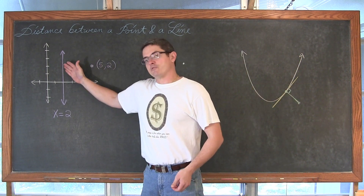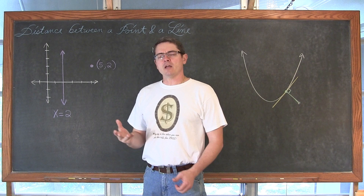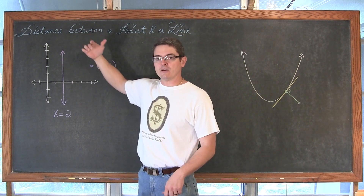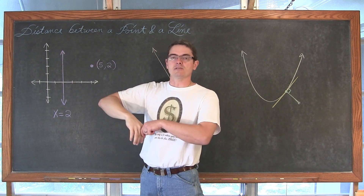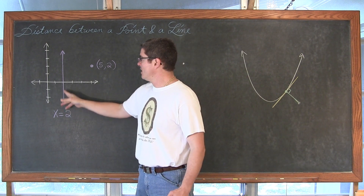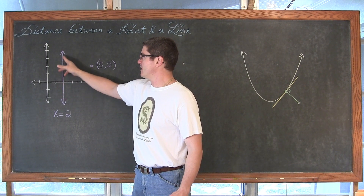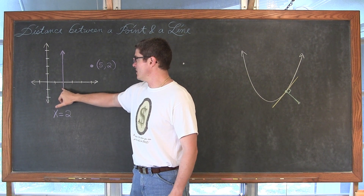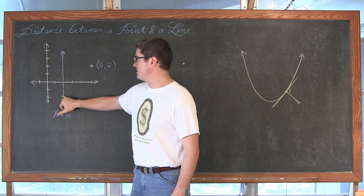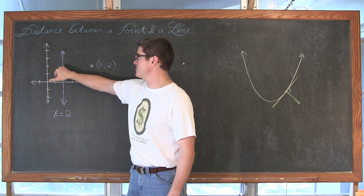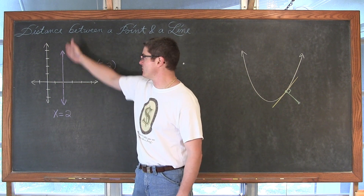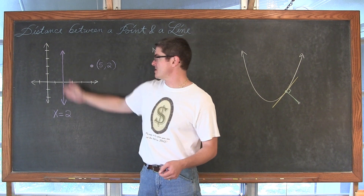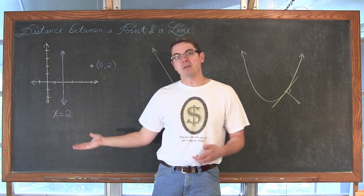Let's focus on this one first. We have a vertical line. All graphs are basically consisted of an infinite number of points. When you move just up or down, it is only the y coordinate that is changing — so (2,0), (2,-1), (2,-2), (2,1), (2,2), (2,3). In a vertical line, the equation is just x equals a number. So this has the equation x equals 2.